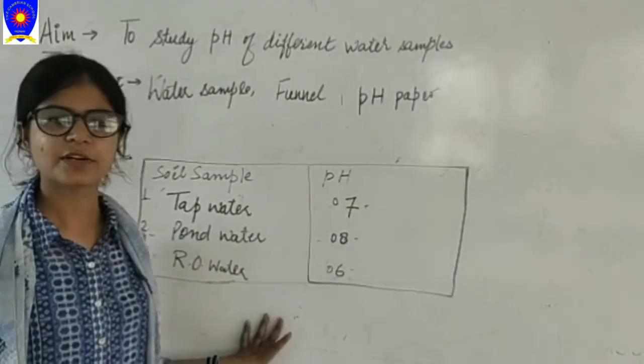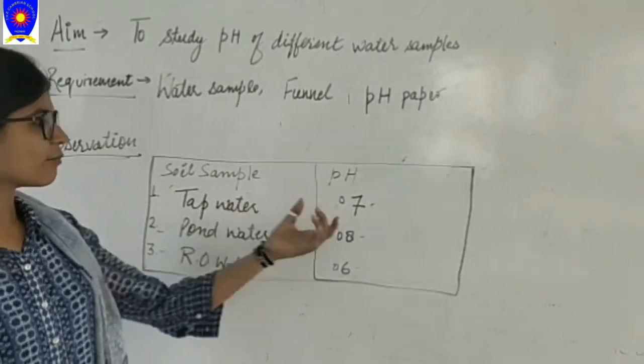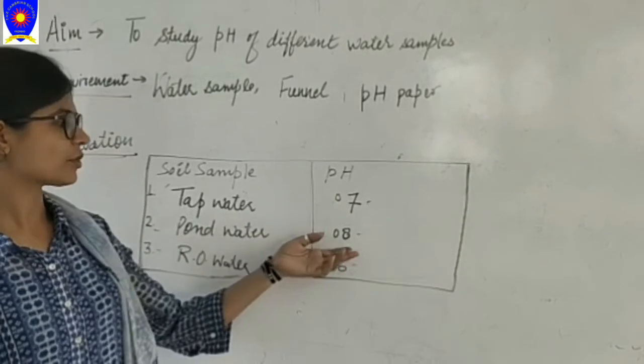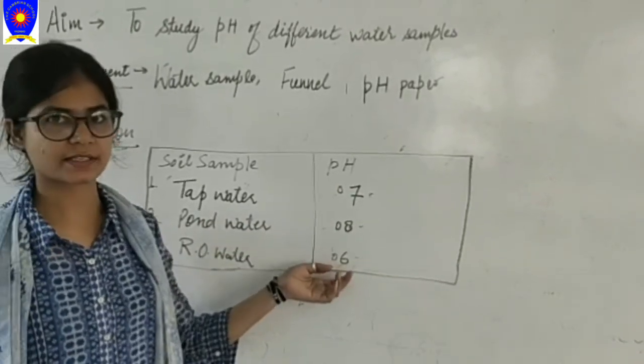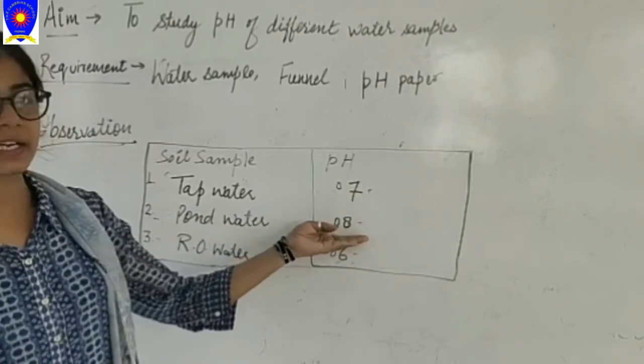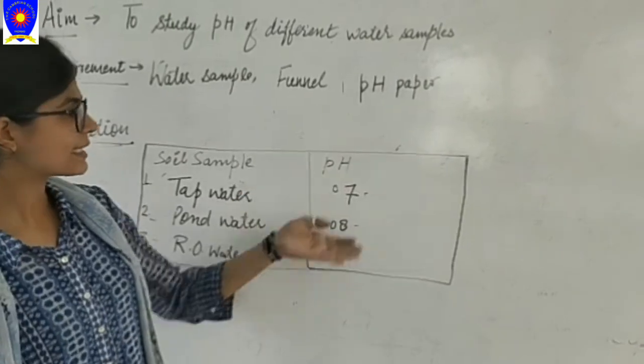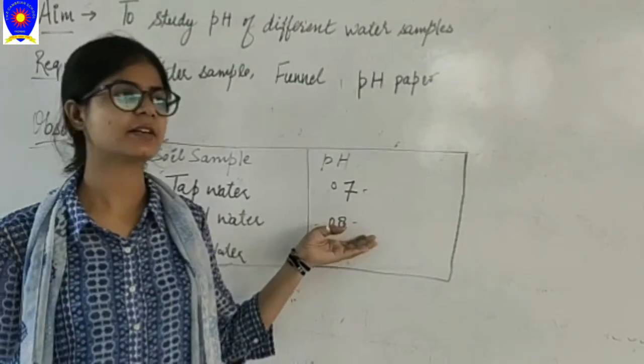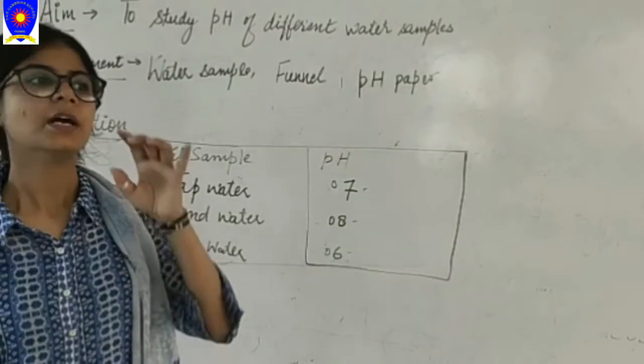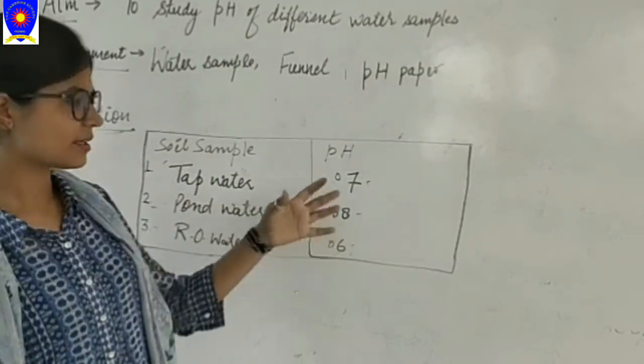So now as you can see that I have written the readings: tap water has pH 7, pond water has pH 8, and RO has pH 6. So you can see that this one is more alkaline water. By reading these pH values, we can see which kind of water is more perfect for organisms who are living in the water.